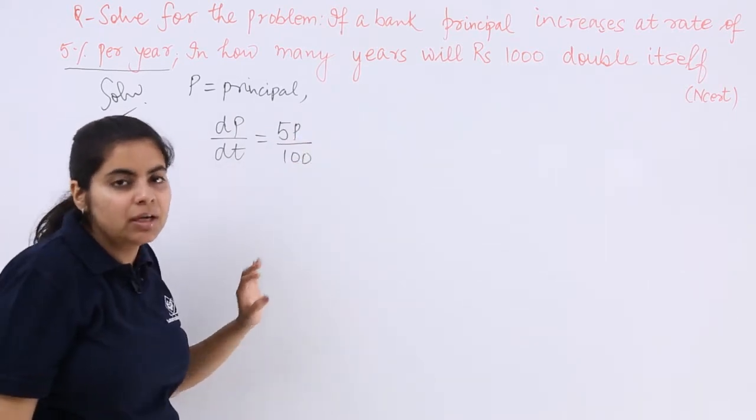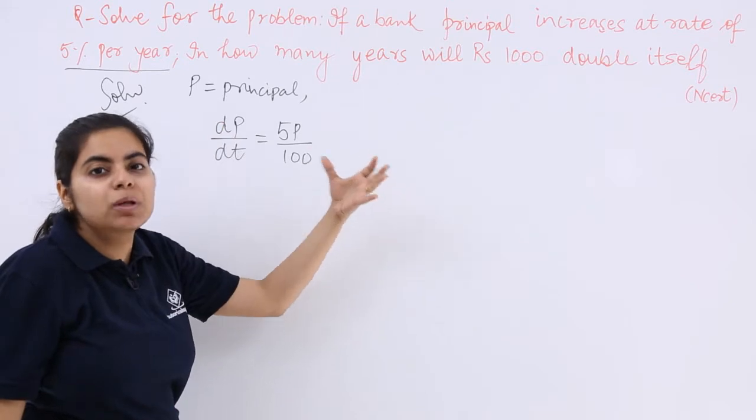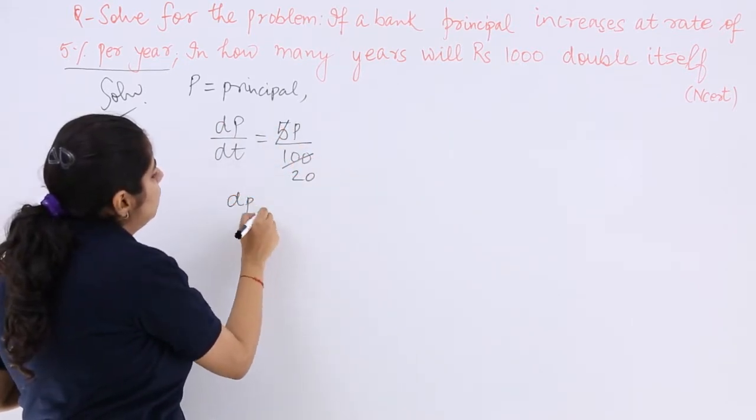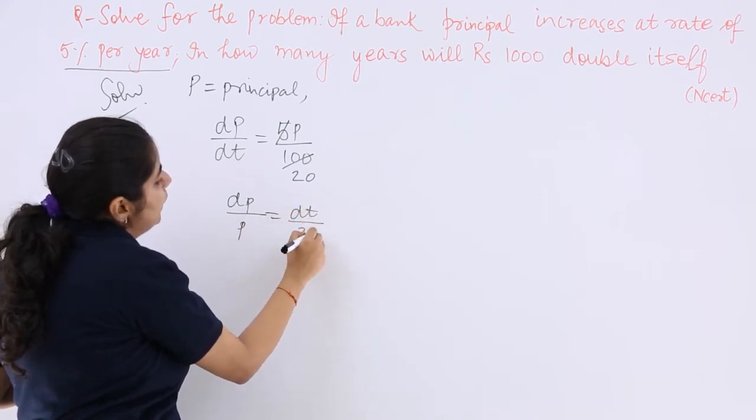Percentage removal, division by 100. Because we are talking of principal, P should be mentioned. So 5 twenties are... dP/P is equal to dt/20.